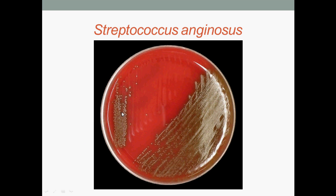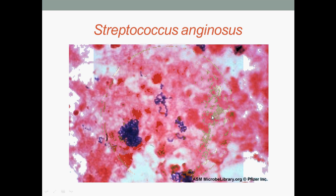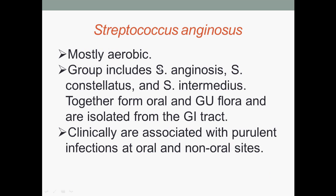Colonies of Streptococcus anginosus and Streptococcus anginosus under microscopic view. Streptococcus anginosus are mostly aerobic. The group includes Streptococcus anginosus, Streptococcus constellatus, and Streptococcus intermedius, which together form oral and genitourinary flora and are isolated from the gastrointestinal tract. Clinically, they are associated with purulent infections at oral and non-oral sites.